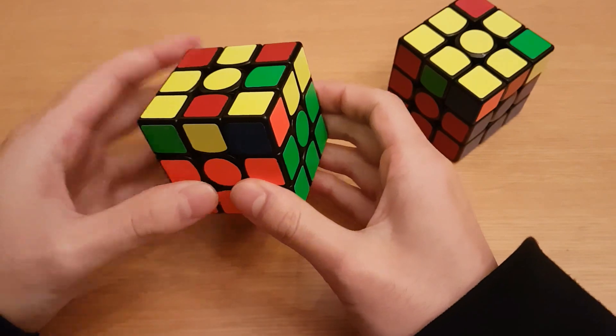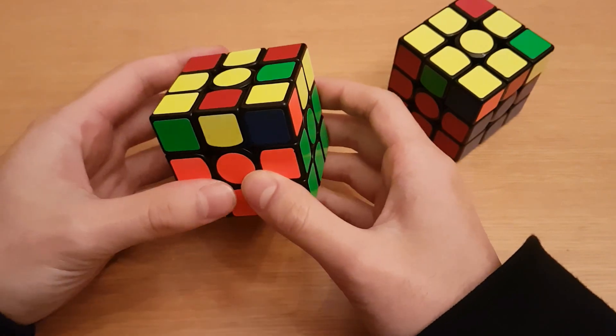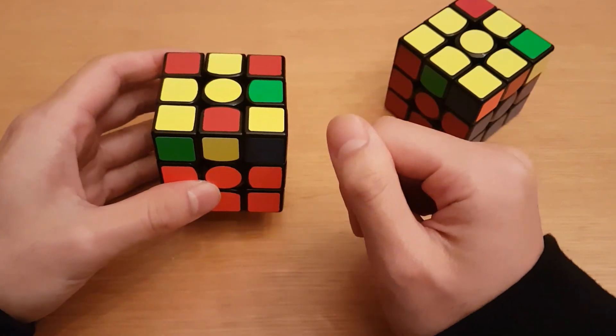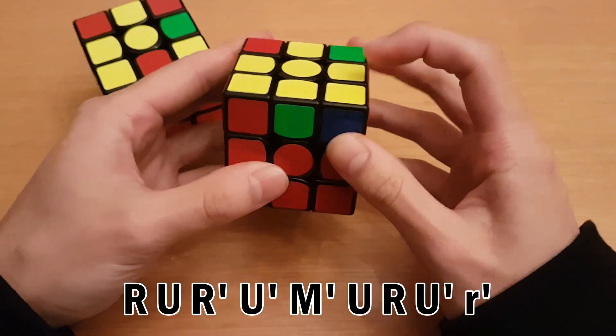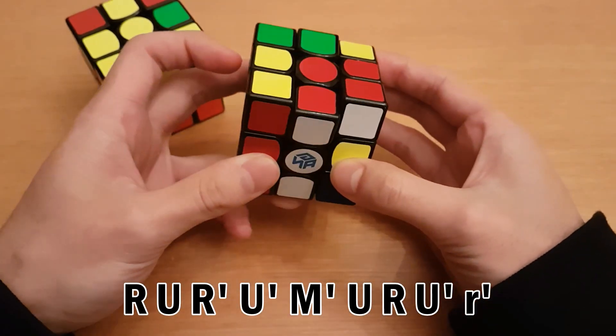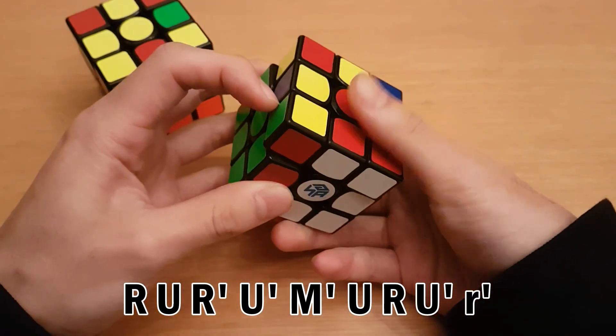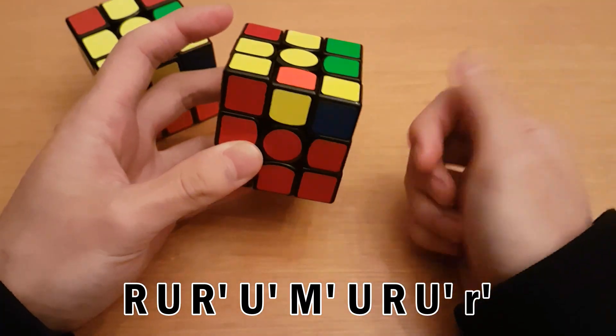It's not as fast as 1-look OLL, but I think it's faster than regular 2-look OLL. The algorithms are: sexy move, M prime, reverse sexy move with a wide turn at the end, and the reverse of that.